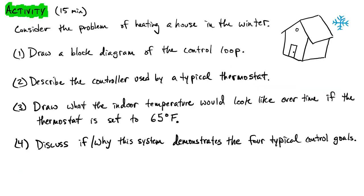This activity is meant to make you reflect on block diagrams, controllers, and how a system is put together to maintain and achieve control. Let's think about the problem of heating a house in the winter — the outside is cold and you want the inside to be a nice temperature. Look back at the block diagram we discussed and draw a control loop, being specific about what goes in each box and what the signals are between different boxes. Then describe the logic of what makes a typical thermostat controller achieve the desired temperature inside the house.